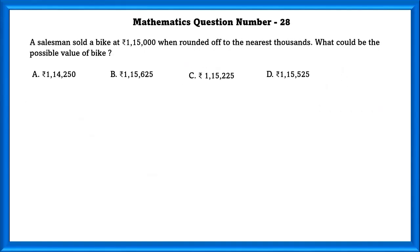Mathematics question number 28. A salesman sold a bike at 1,15,000. When rounded off to the nearest thousand, what could be the possible value of the bike? Rounding off, we will get the possible value of the bike as 1,15,225.